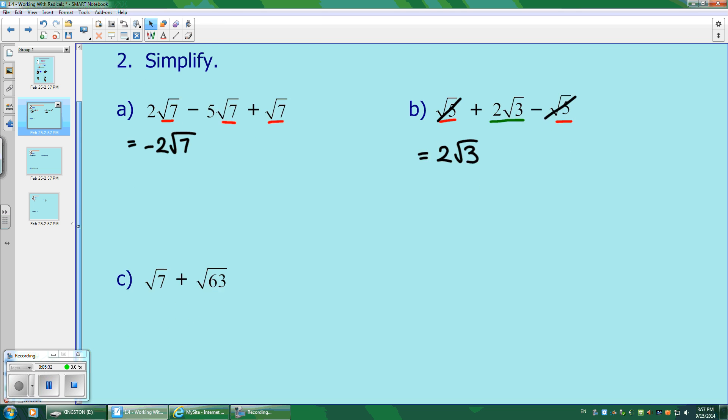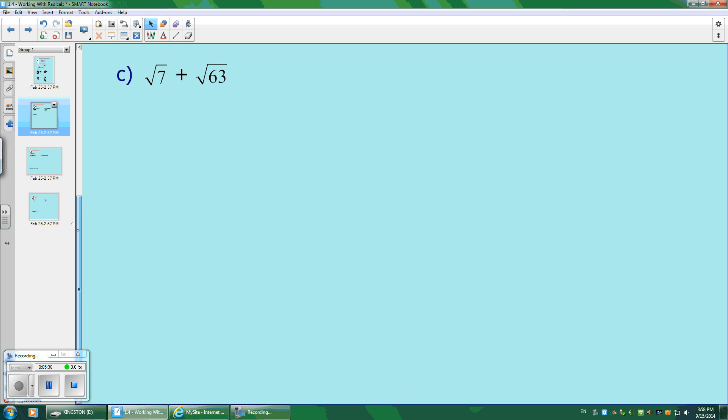Moving on to the next one. It looks like I can't put these two together because one's a root 7 and one's a root 63. They're different. But if we go through the simplifying process first, I notice that there is a perfect square in 63, which is 9, because 9 times 7 gives you 63. So what I'm going to do is root that 9, which will give me 3. So 3 root 7. All of a sudden now their roots match, which means I can add them together. So it's 1 root 7 plus 3 more root 7s gives you 4 root 7s. And that's how you add and subtract.